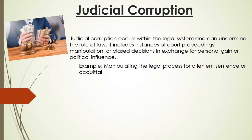The fifth form of corruption is judicial corruption. Judicial corruption occurs within the legal system and can undermine the rule of law. It includes instances of manipulation of court proceedings or biased decisions in exchange for personal gain or political influence. For example: manipulating the legal process to secure a lenient sentence or favorable outcome.